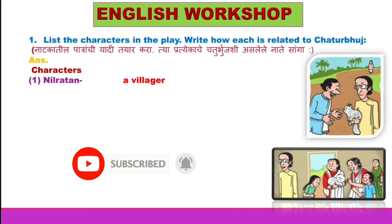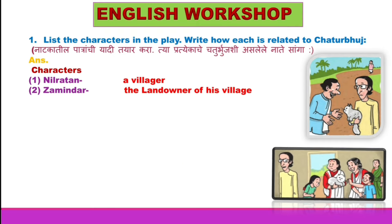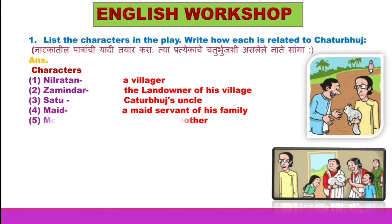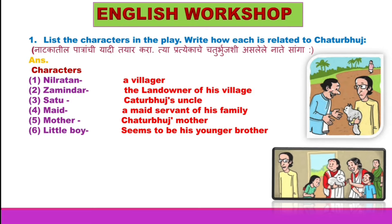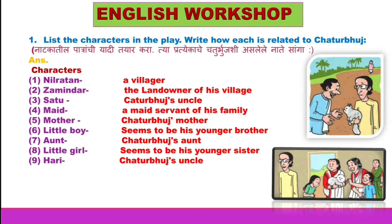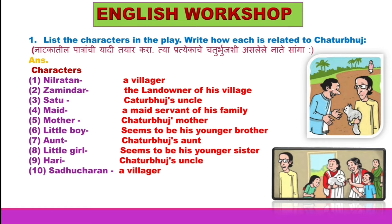Neel Ratan, a villager. Zamindar, the landowner of his village. Satun, Chaturbhuj's uncle. Maid, a maidservant of his family. Mother, Chaturbhuj's mother. Little boy, seems to be his younger brother. Aunt, Chaturbhuj's aunt. Little girl, seems to be his younger sister. Hari, Chaturbhuj's uncle. Sadhu Charan, a villager. Paran, a villager.